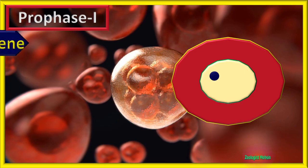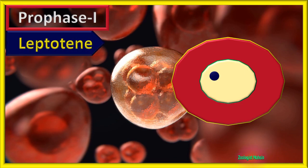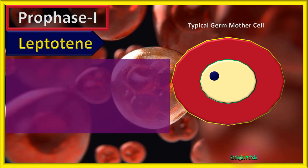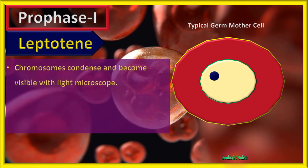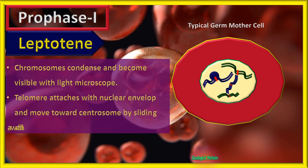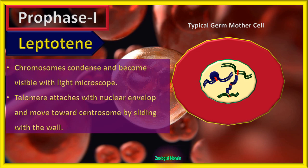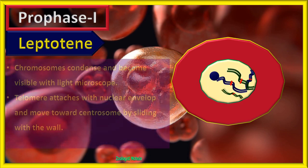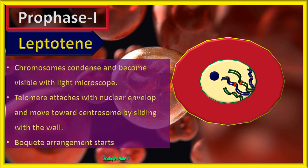Prophase 1 — the first stage is leptotene. It begins in a typical germ mother cell. In leptotene, chromosomes condense and become visible with a light microscope. Telomeres of chromosomes attach with the nuclear envelope and move towards the centrosome by sliding along the wall. Telomeres are the end or terminal parts of each chromosome. The bouquet arrangement starts in this stage.